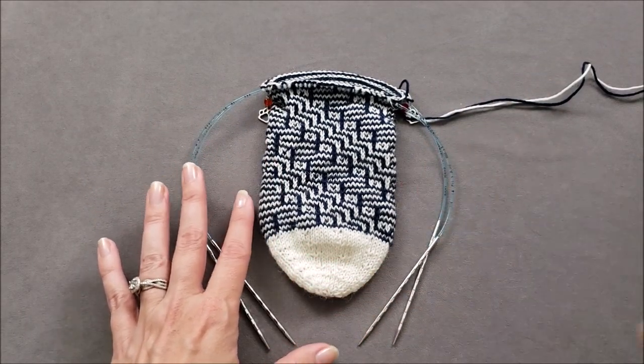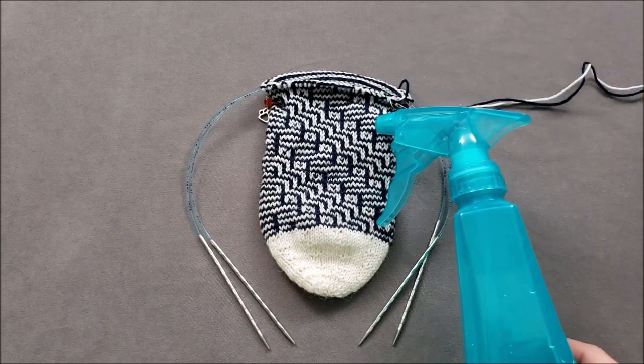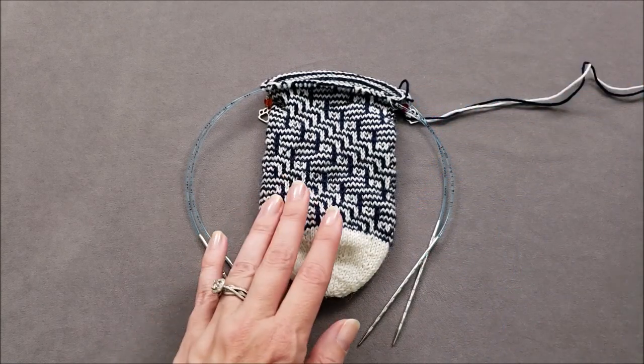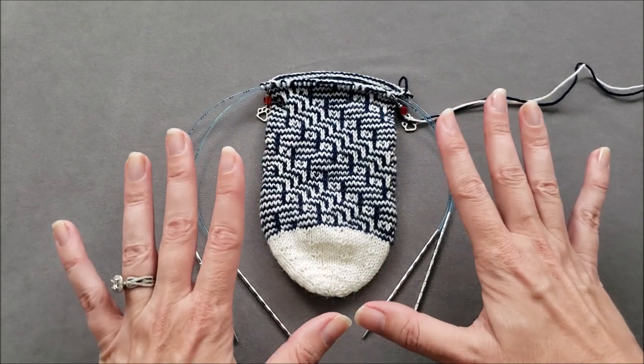Often blocking can be as simple as wetting your knits and then laying them flat to dry. For projects like these socks that are primarily wool, I'll just give them a light spray of water from a bottle, then gently shape them to even out the fabric and just lay them flat to dry.